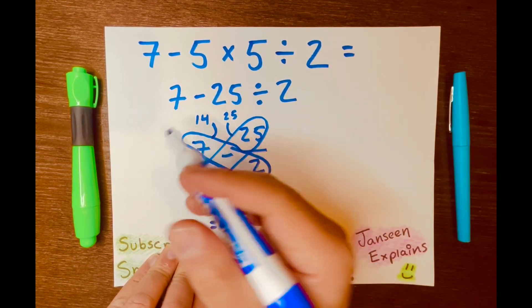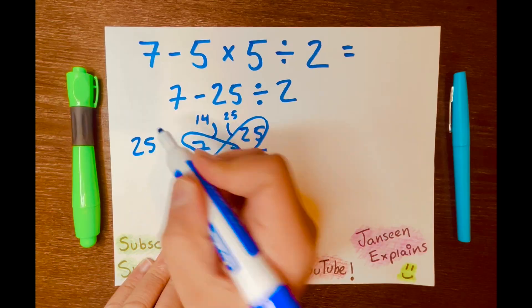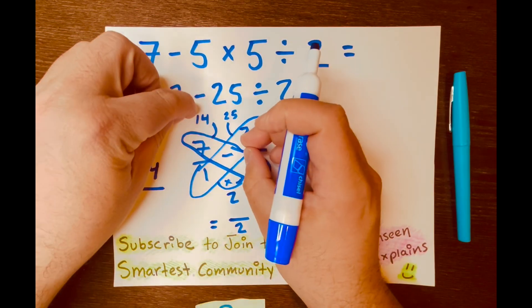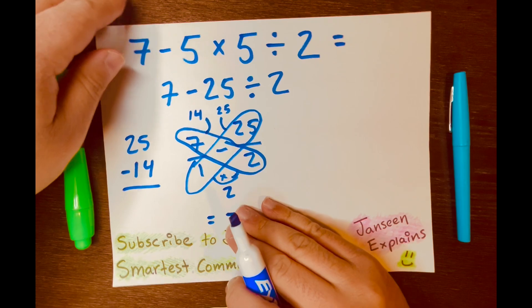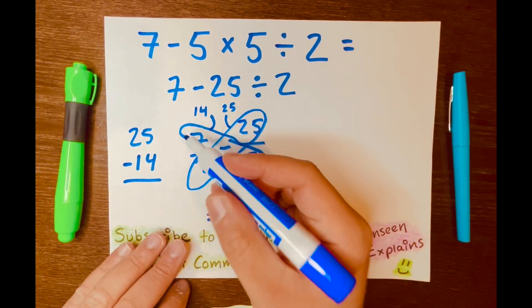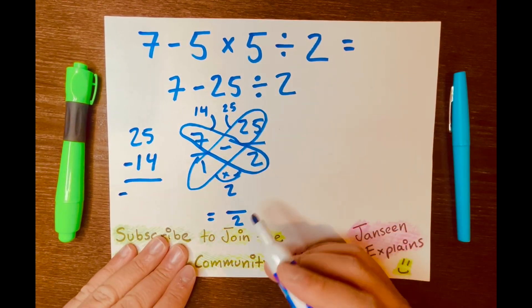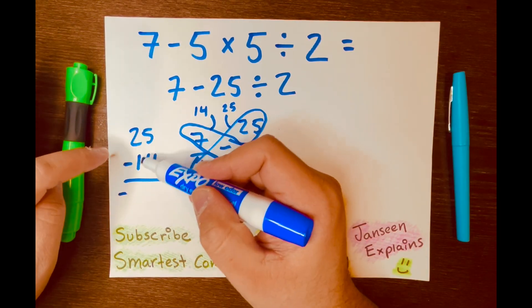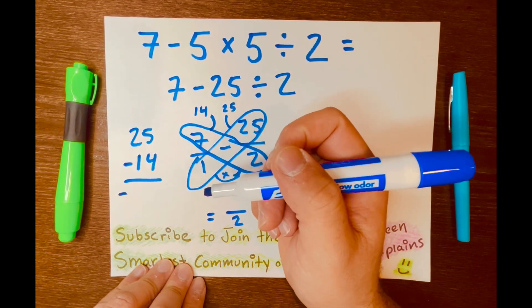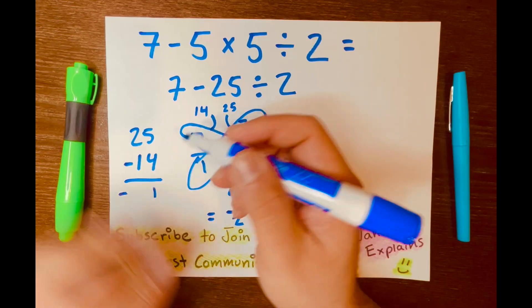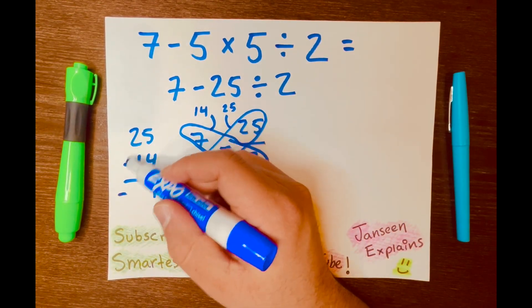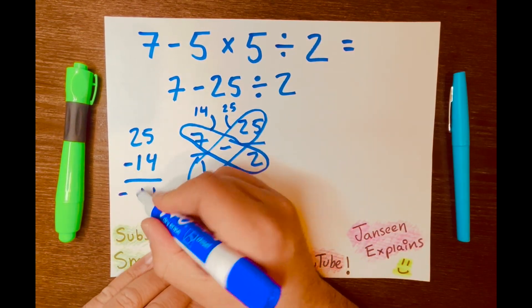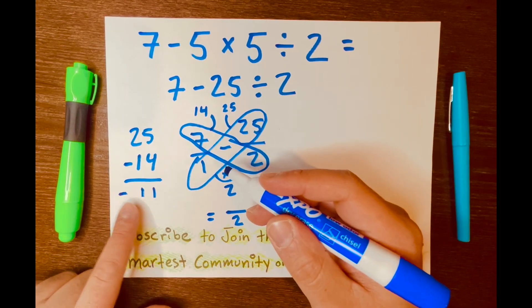So the answer will be negative. Let's subtract 25 minus 14. So we just rotated it. We know the answer is going to be negative. 5 minus 4 equals 1. 5 took away 4 equals 1. And 2 minus 1 equals 1. So the answer is negative 11.